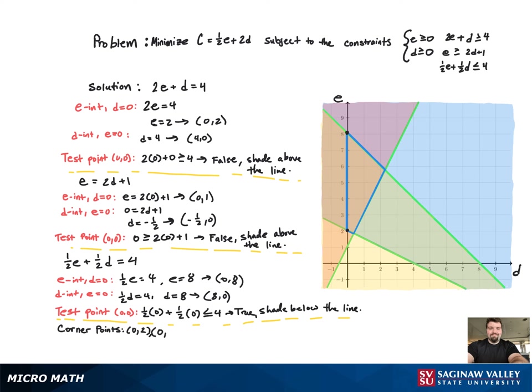The four corner points are 0, 2; 0, 8; the point 2 fifths comma 9 fifths; and the final point is 7 thirds comma 17 thirds.